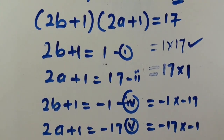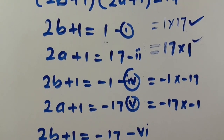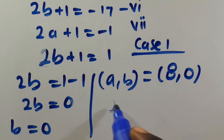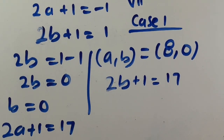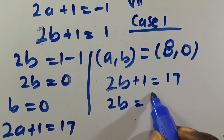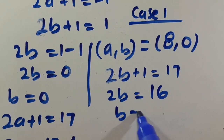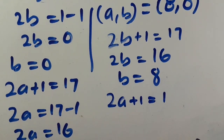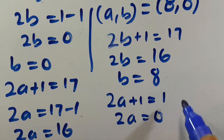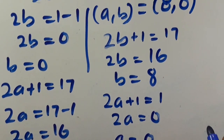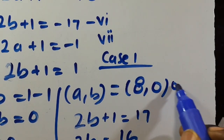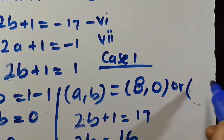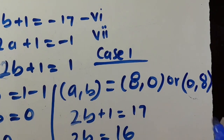For positive case 2, with 2b plus 1 equals 17, we get 2b equals 16, so b equals 8. Then 2a plus 1 equals 1 gives 2a equals 0, so a equals 0. This gives us a comma b equals 0 comma 8 — the reciprocal of the first solution.